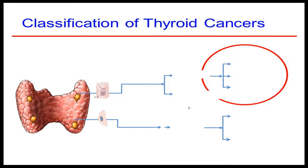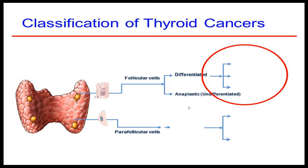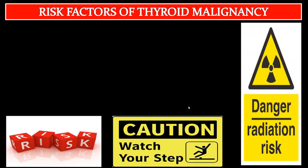Classification of thyroid cancers depends on the type of cells: follicular cells or parafollicular cells. Follicular cells can give rise to differentiated or anaplastic undifferentiated carcinomas. The well-differentiated carcinomas include follicular, Hürthle cell, and papillary. Parafollicular cells can give rise to medullary carcinoma, which can be sporadic in 80% or hereditary in 20%.